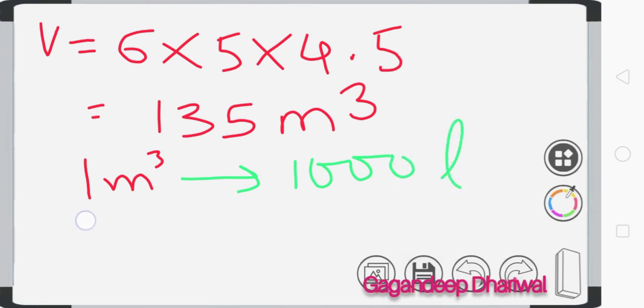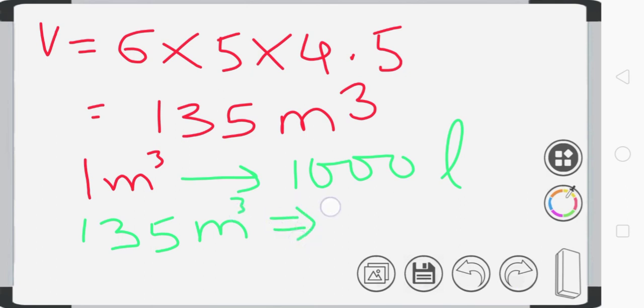It means 135 meter cube equals to 135 multiply with 1000 liters. So your answer is 135,000 liters.